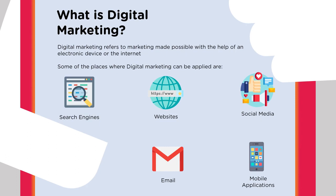First off, before we get started, we're going to talk about what digital marketing is. Digital marketing covers a lot of areas — it's very broad. Really, what it refers to is just marketing that a company, person, individual, group, or organization does in the form of an electronic device or with the aid of the internet. It's having something digitally, not something tangible like a billboard, newspaper, or TV.